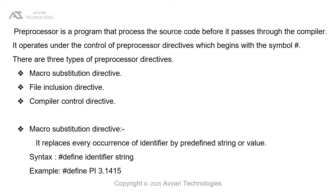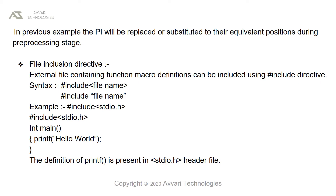The first type is macro substitution directives. It replaces every occurrence of an identifier with a predefined string or value. The syntax is: hash define, space, identifier, space, string or value. For example: #define PI 3.1415. In this example, PI will be replaced or substituted to its equivalent positions during the preprocessing stage.